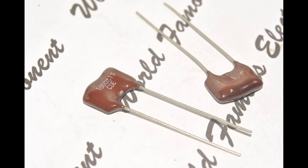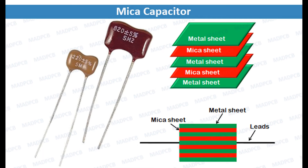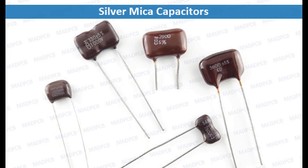High voltage testing equipment: mica capacitors find use in high-voltage testing equipment, such as capacitive voltage dividers and voltage measurement circuits. These capacitors ensure accurate voltage measurement and withstand the high voltages encountered during testing and calibration procedures. Overall, mica capacitors are essential components in high-voltage applications due to their robust construction, high dielectric strength, and stable performance under extreme voltage conditions, serving industries including power generation, telecommunications, aerospace, and research.